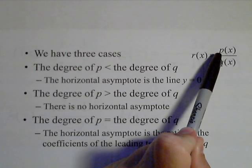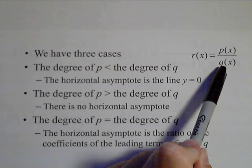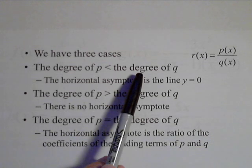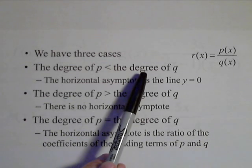So P is the numerator of our rational function, Q is the denominator. If the degree of the numerator is smaller than the degree of the denominator, in other words, if the degree of the denominator is bigger,